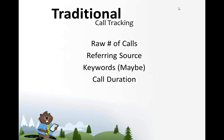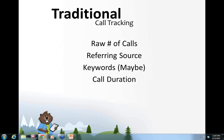Let's talk about traditional call tracking — what it does, the data it provides, how it works. Traditional call tracking can tell us the raw number of phone calls from a source — how many came from a PPC campaign, from specific ads, and even keywords. It can tell us the referring source and online behavior of that referral. It used to provide organic keywords, though Google has ended that. It also gives you call duration and occasionally call recordings.